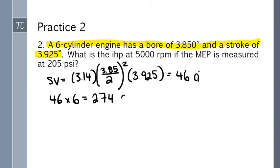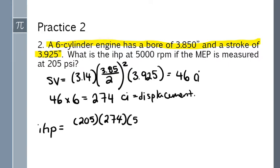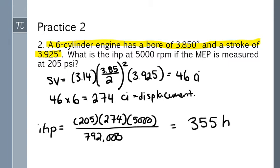Now there are six cylinders in this engine. 274 cubic inches is the displacement. And now we're ready to go with the indicated horsepower formula. Mean effective pressure 205, displacement 274, engine speed 5000 rpm divided by 792,000. And we get 355 horses.